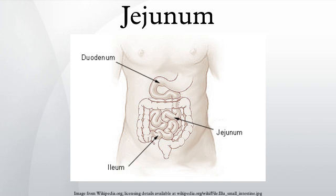While the length of the entire intestinal tract contains lymphoid tissue, only the ileum has abundant Peyer's patches, which are unencapsulated lymphoid nodules that contain large numbers of lymphocytes and immune cells, like microfold cells.